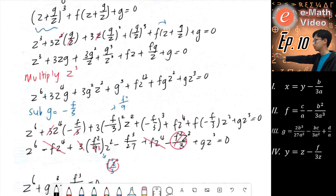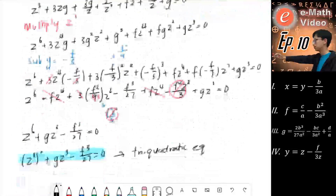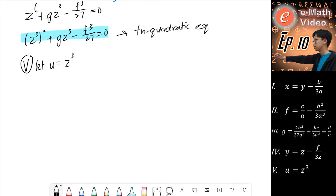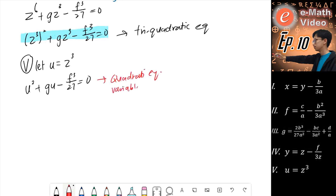For the fifth substitution, we let u equal z cubed. So we end up with: u squared plus gu minus f cubed over 27 equals zero. As you can see, this is a quadratic equation where the variable is u, and g and f are just constants.